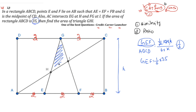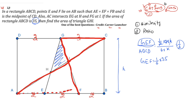Since the area of ABCD is 35 (given), area of GEF is 35/6. Now we need to find the shaded part. First, use similarity — look at triangle GIC and triangle AIF. Both triangles are similar.